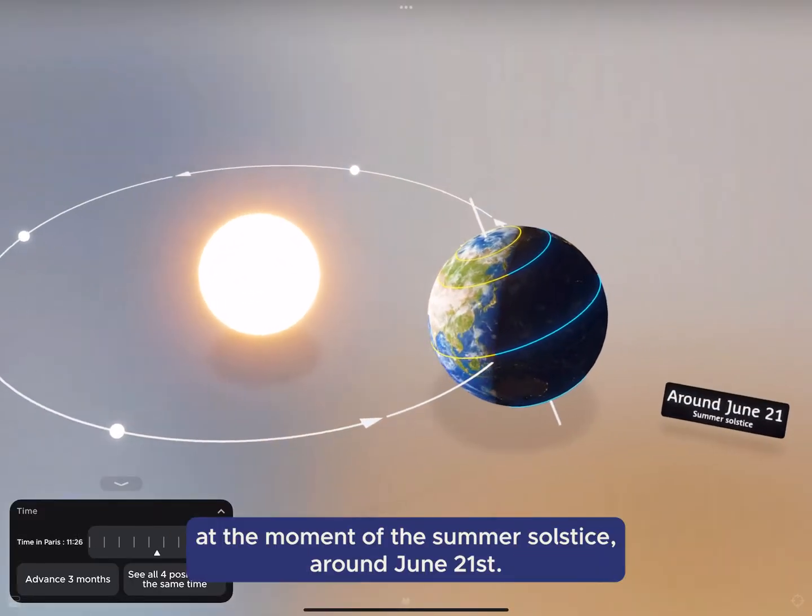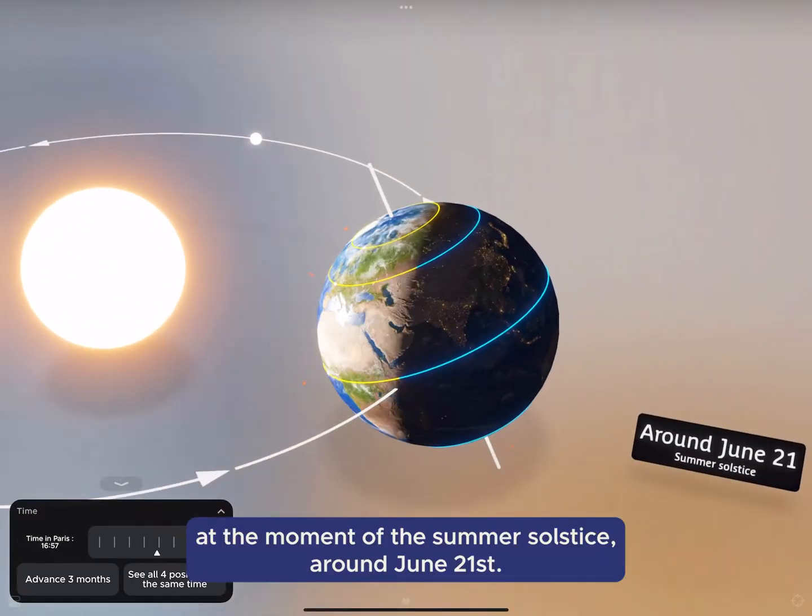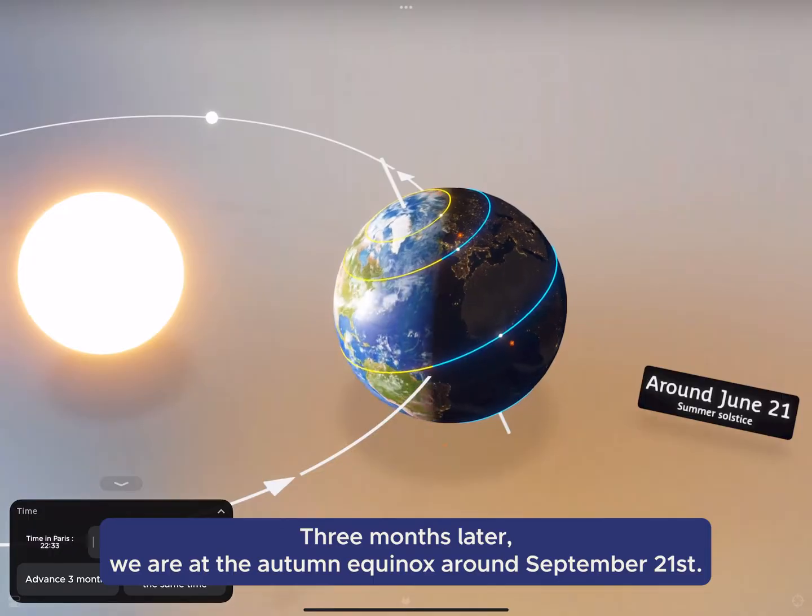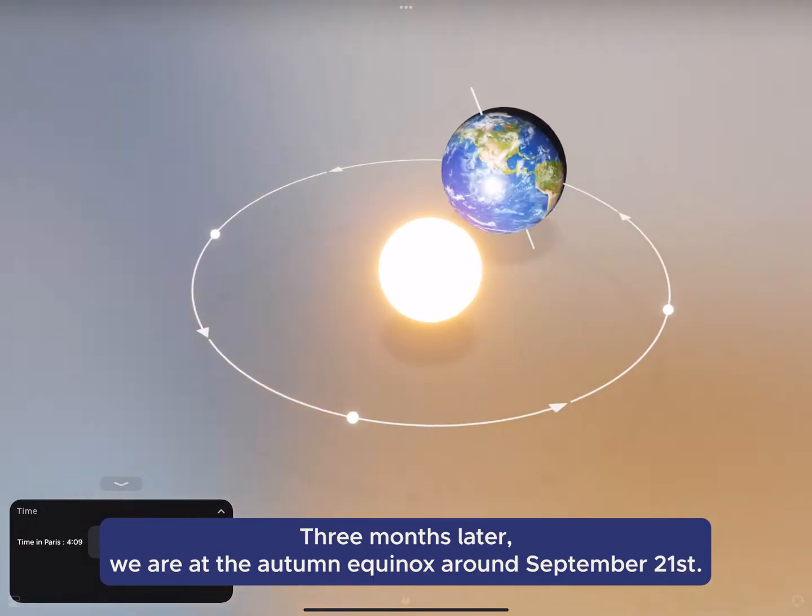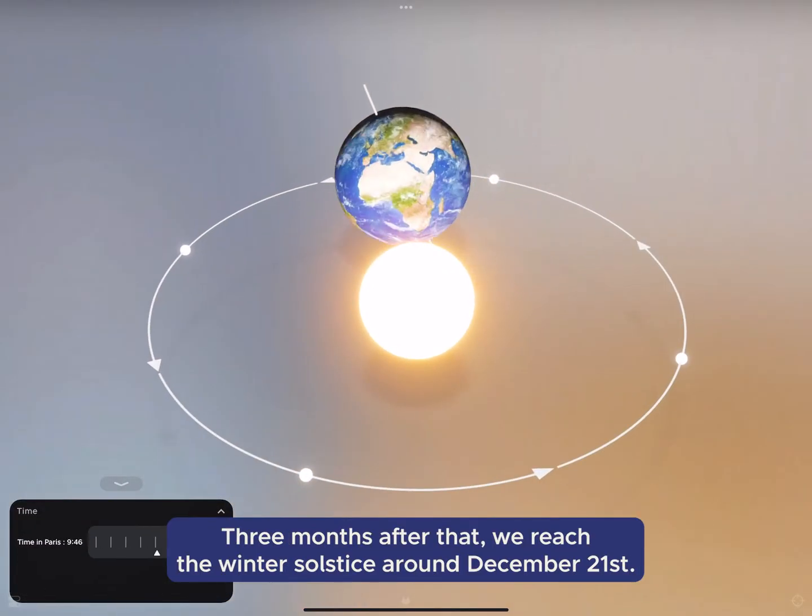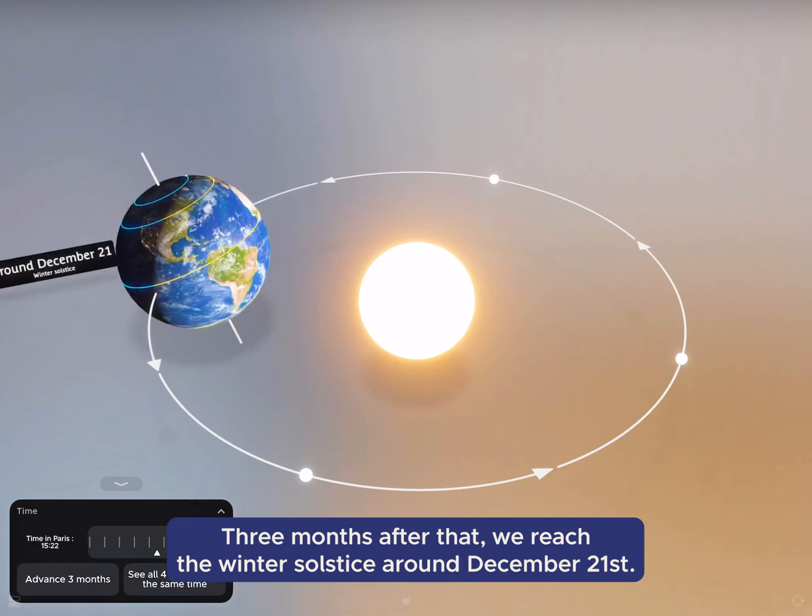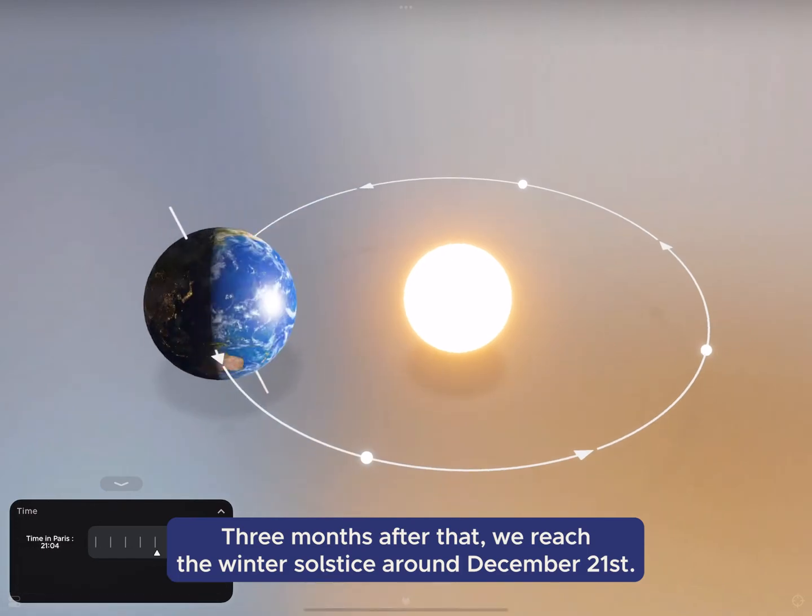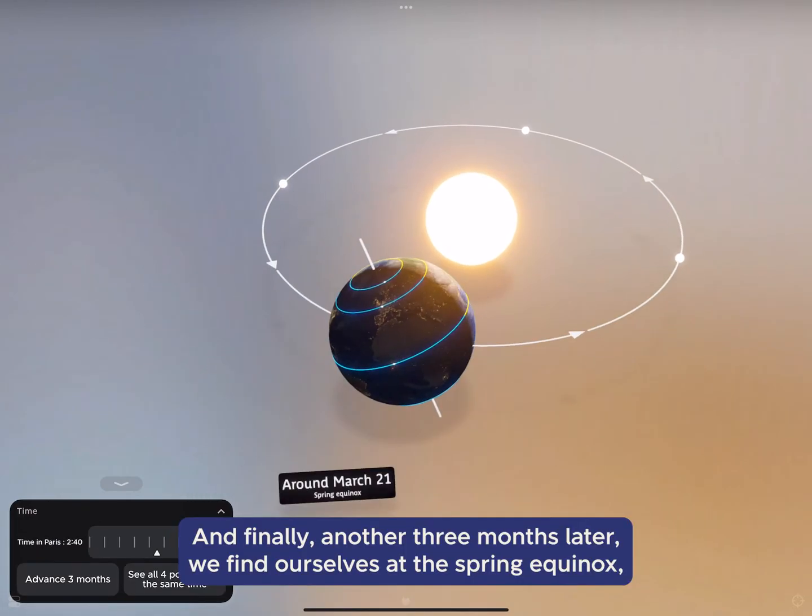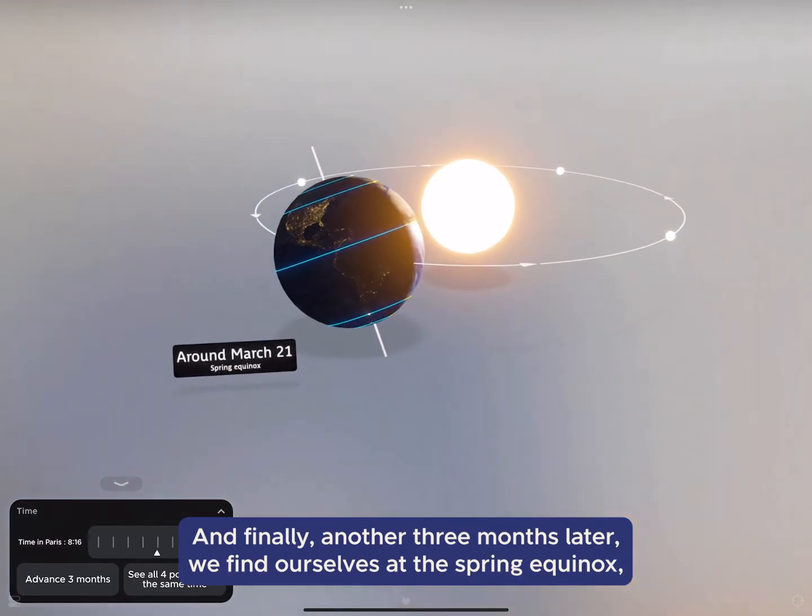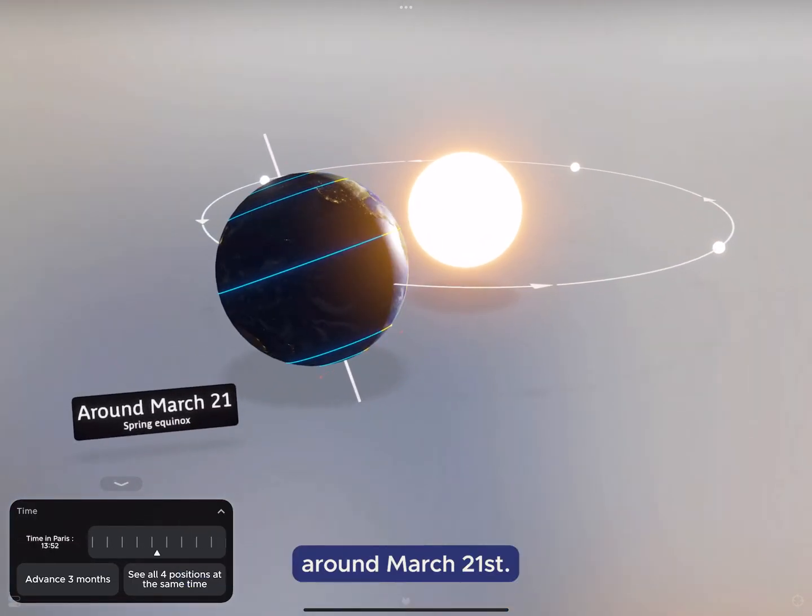Here, we are at the moment of the summer solstice, around June 21st. Three months later, we are at the autumn equinox, around September 21st. Three months after that, we reach the winter solstice, around December 21st. And finally, another three months later, we find ourselves at the spring equinox, around March 21st.